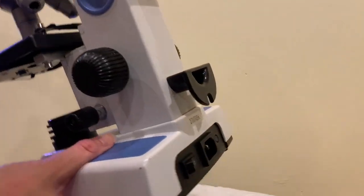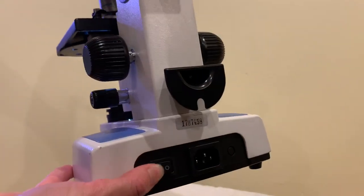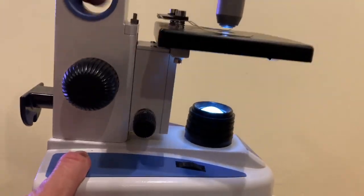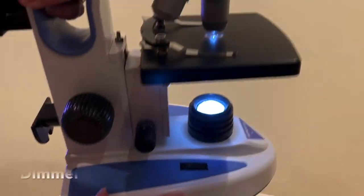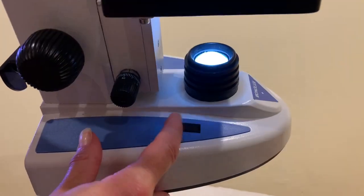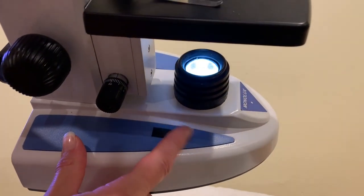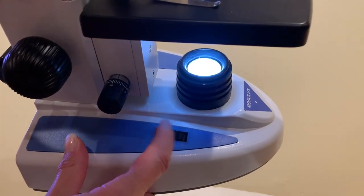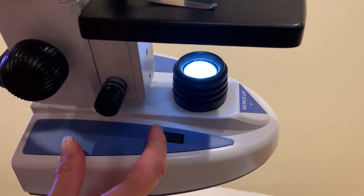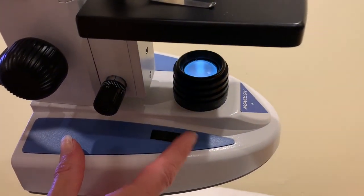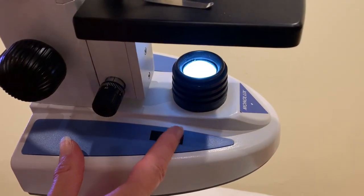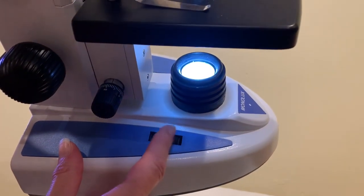And one last thing. When you turn on your microscope here and the light turns on, there is this knob right here and when you turn this knob, if you look, it increases the brightness and decreases the brightness of the light. So this helps with contrast.